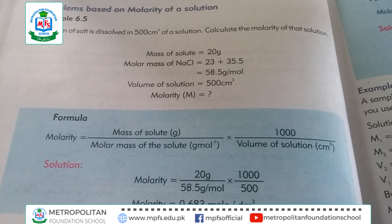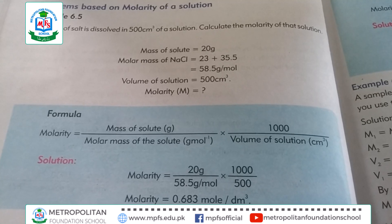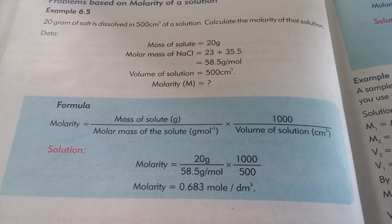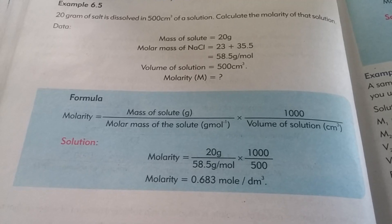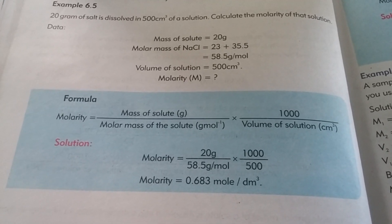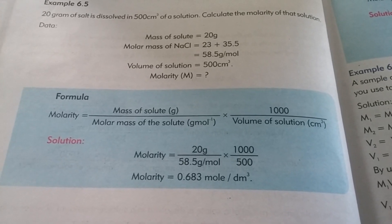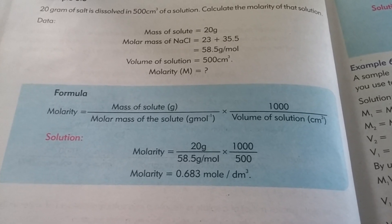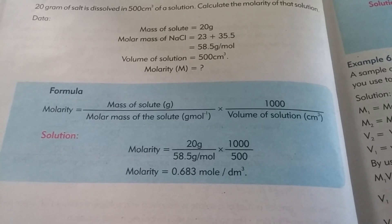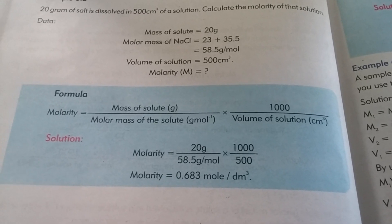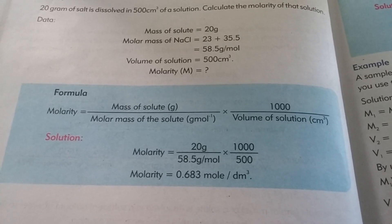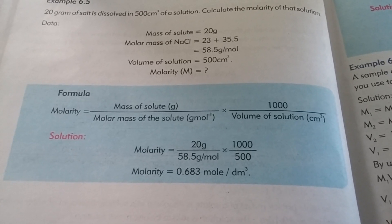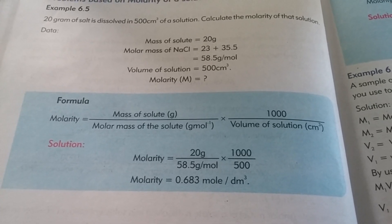Then we multiply this value by 1000 and divide by the volume of solution. The volume of solution is 500 cm³, so we put 500. Solving 20 divided by 58.5, multiplied by 1000, and divided by 500, we get the final value of molarity: 0.683 mol per dm³.